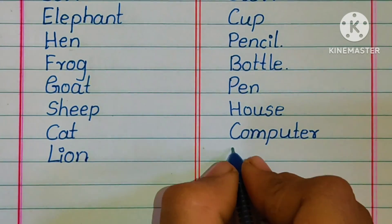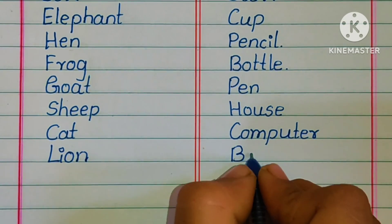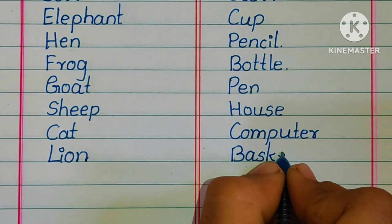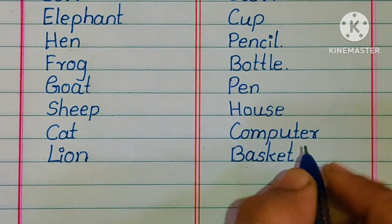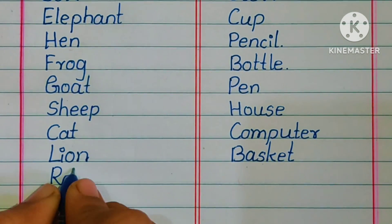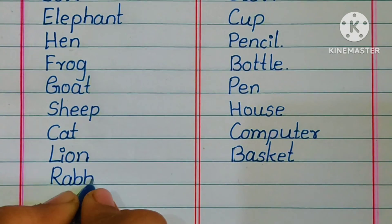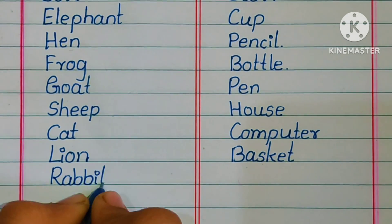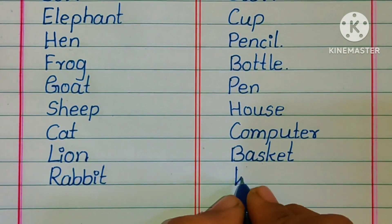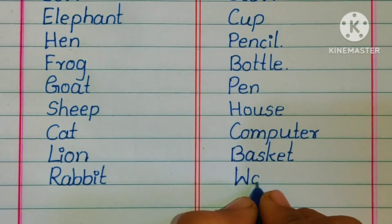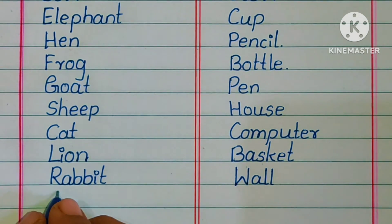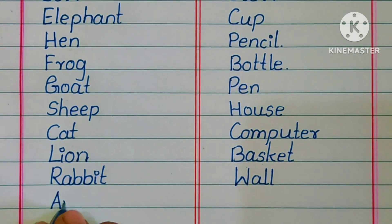Lion is living thing. Basket — it is non-living thing. Rabbit — it is living thing. Wall — it is non-living thing.